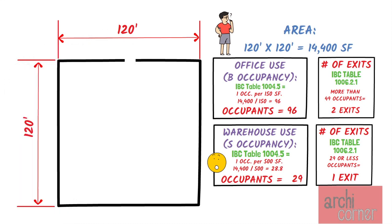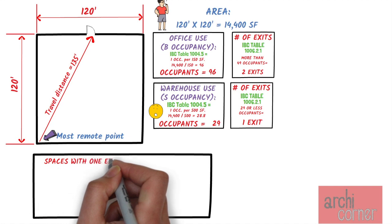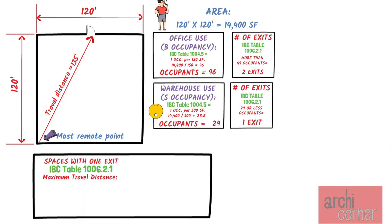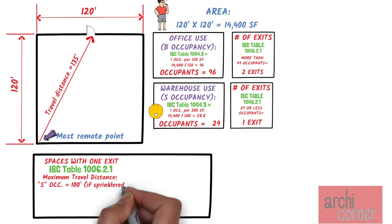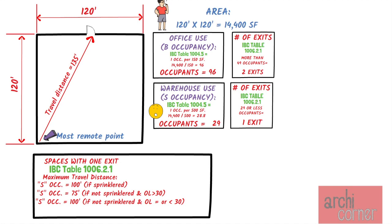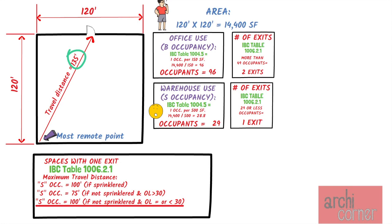Assuming this space is used for warehouse, we place only one exit. Now let's determine the travel distance. Starting from the most remote point of the space, even if there are no obstructions and a person can access the door in a straight line, the travel distance would still be 135 feet. Looking at IBC Table 1006.2.1, the maximum travel distance for warehouse — normally classified as an S occupancy — is limited to 100 feet if the building is sprinklered, 75 feet if not sprinklered with an occupant load greater than 30, or 100 feet if not sprinklered with an occupant load of 30 or less. Since we are limited to 100 feet, we are not in compliance with the building code.